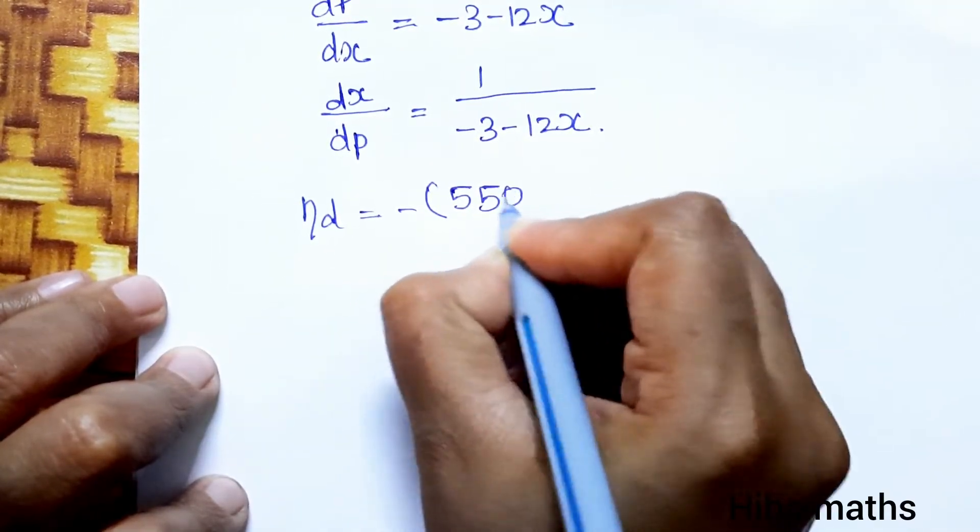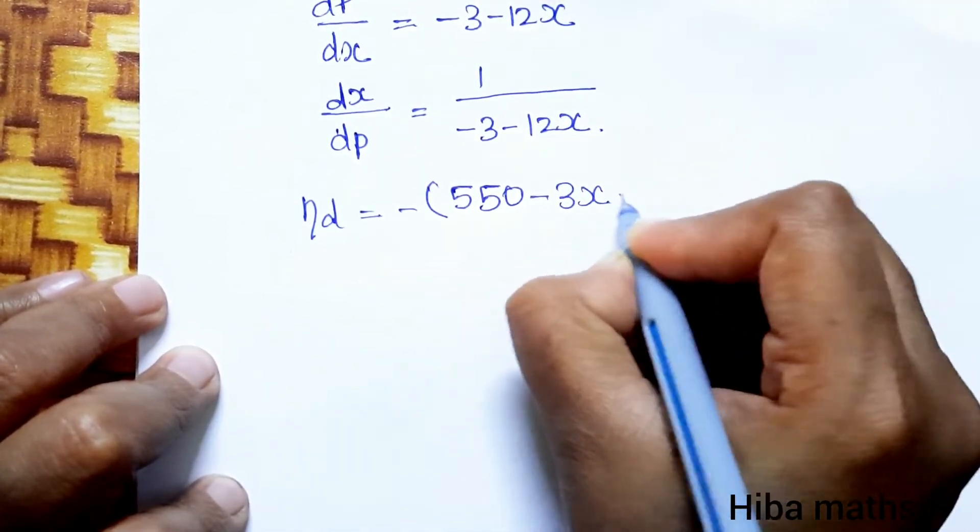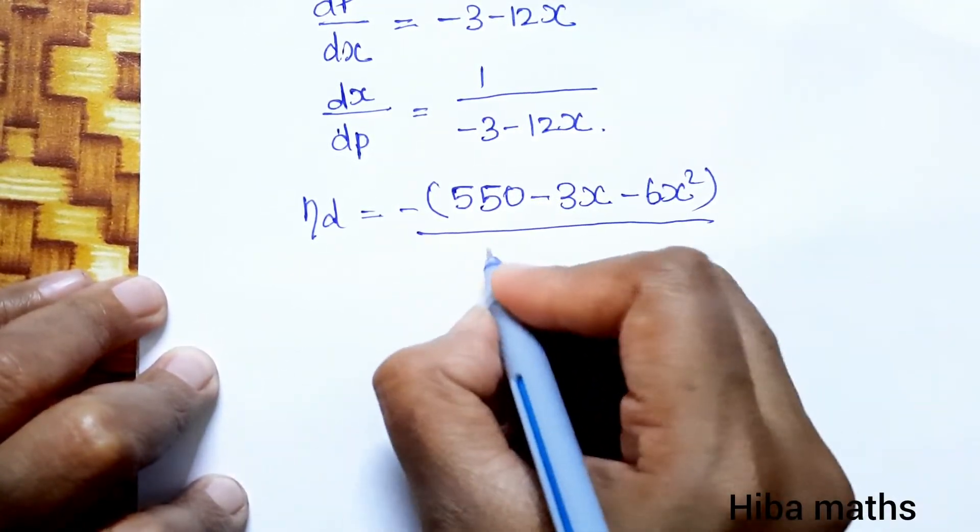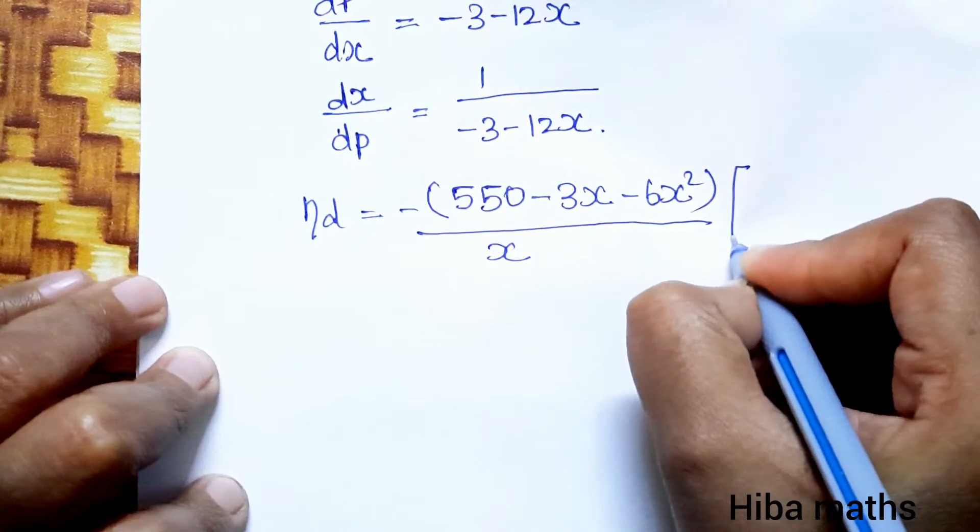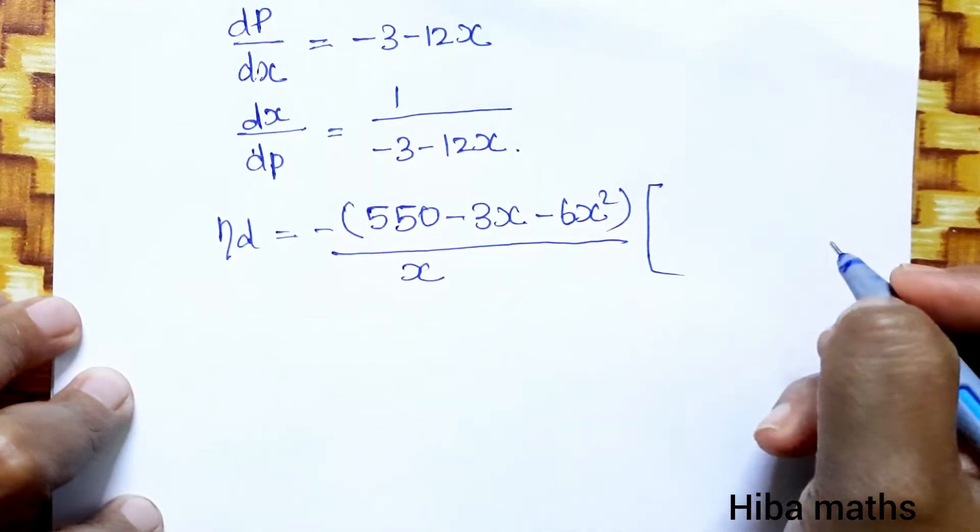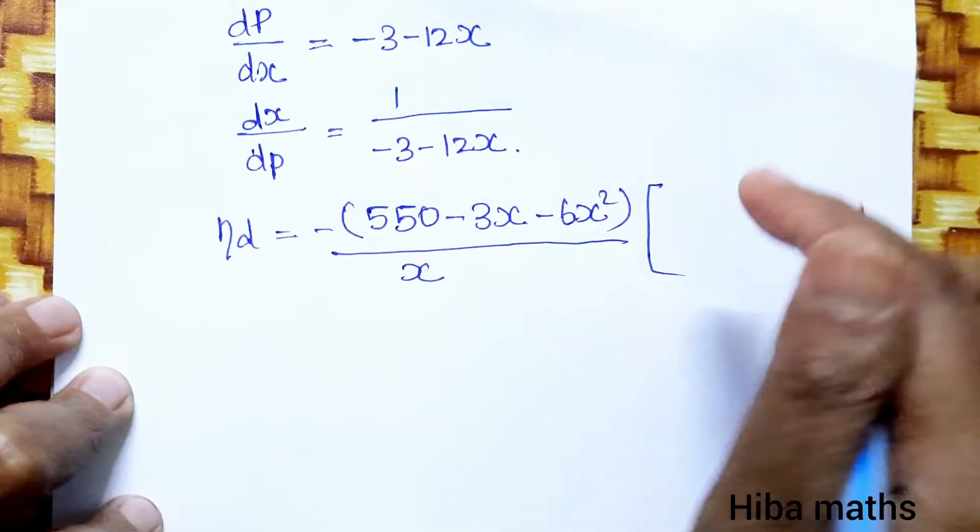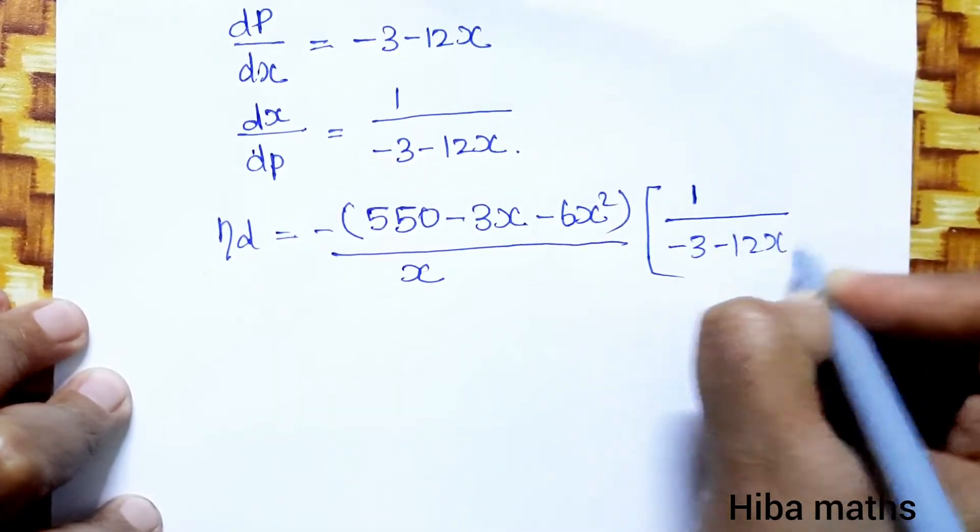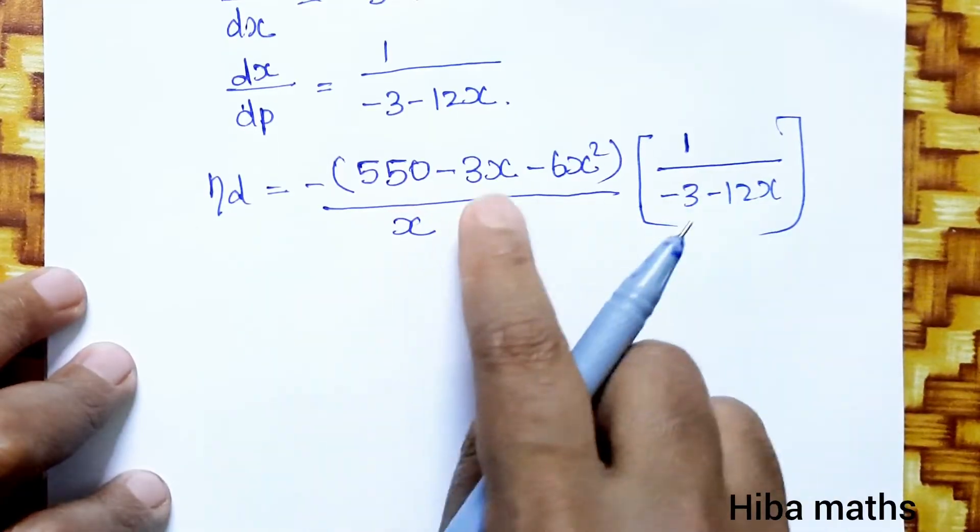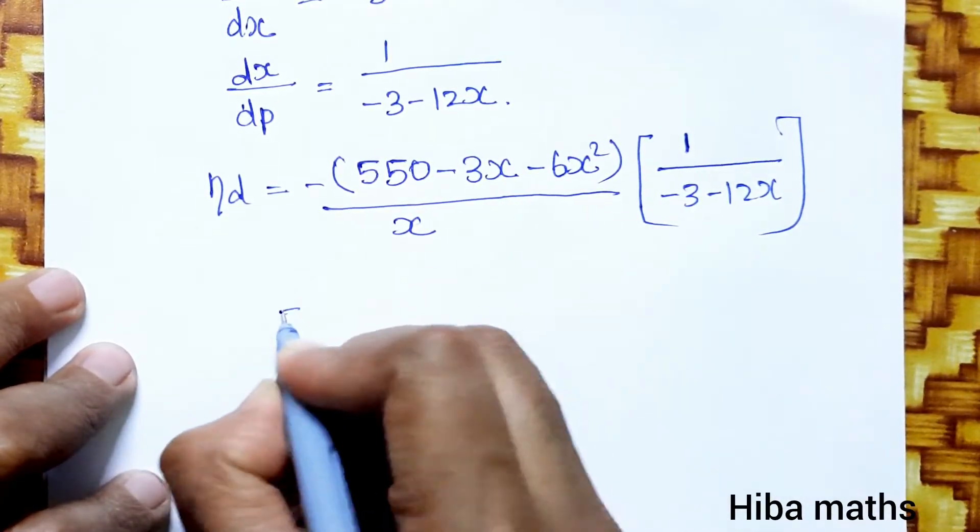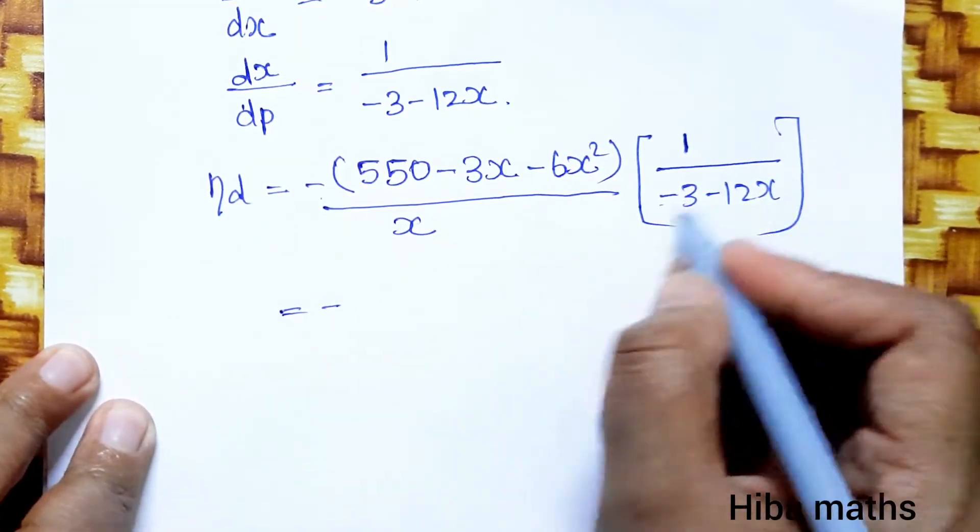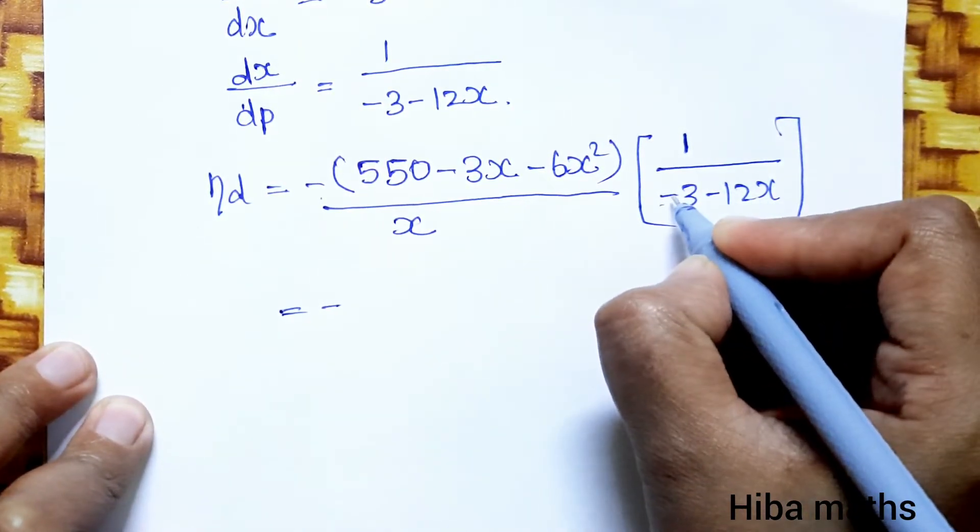Eta d equals minus P by x into dx by dP. This will be equal to minus 550 minus 3x minus 6x square divided by x, into 1 by minus 3 minus 12x.